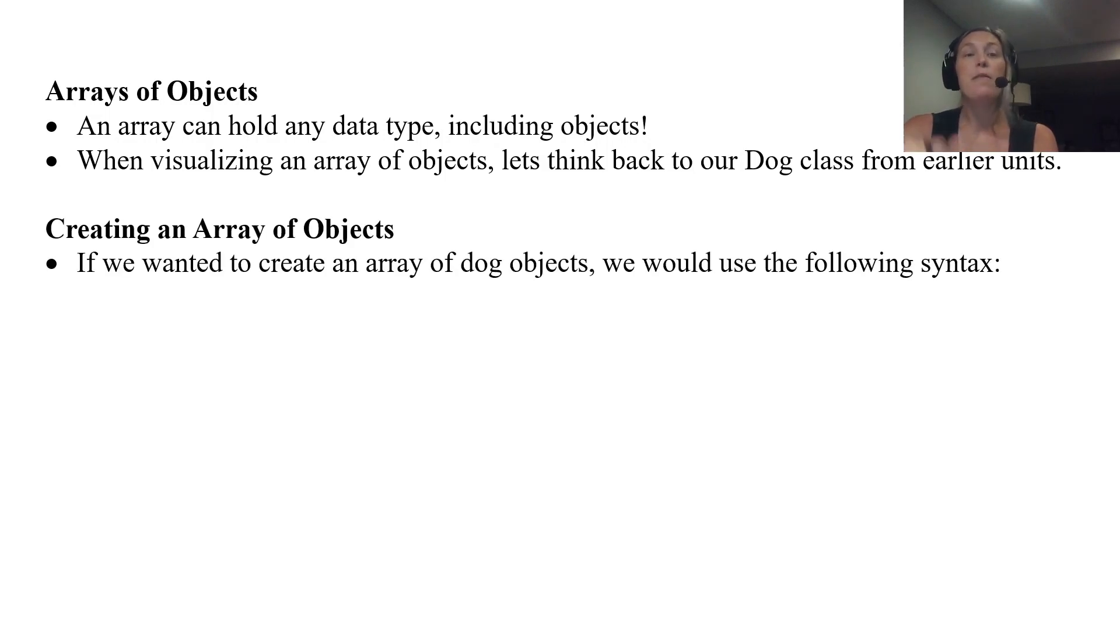If we wanted to create an array of dog objects, the syntax is the same. It's just going to look a little different because instead of declaring as an int or string, we create it with the actual type. So if I want to create an array of dog objects, I use Dog followed by open-close brackets, my reference, and then the new operator, and then Dog with the length of the array that I want. The syntax for creating an array is the exact same; we're just using our object name in place of the data type.